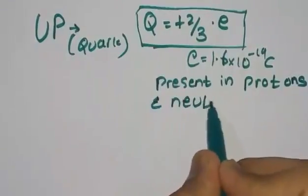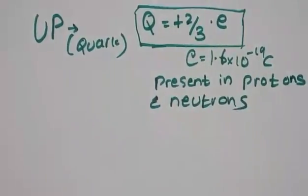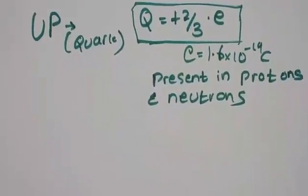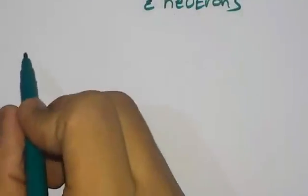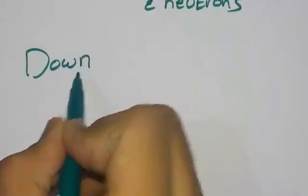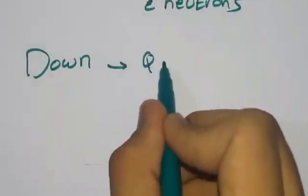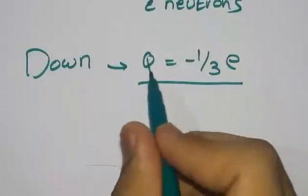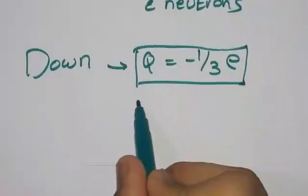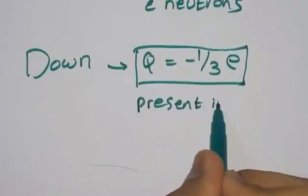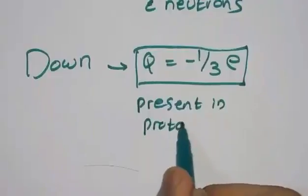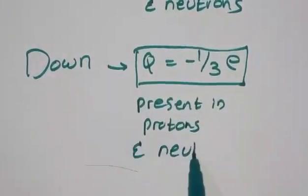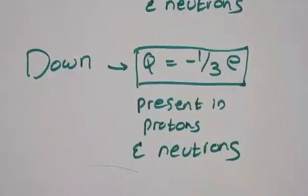Now about the down quark. Down quarks have a charge of Q = -1/3 e, that is 1.6/3 × 10^-19 coulombs. They are also present in protons and neutrons.